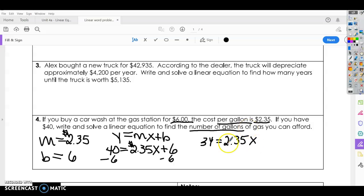Let's divide by the $2.35, and x is going to be around $14.47. So that means we're going to get almost 14 and a half gallons. So we're going to get 14.47 gallons of gas plus a car wash for the $40 that we have.